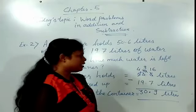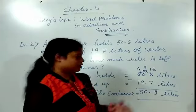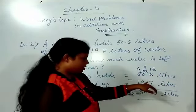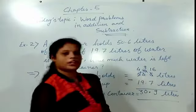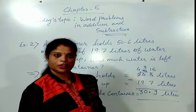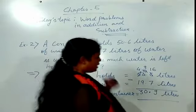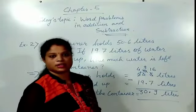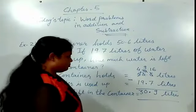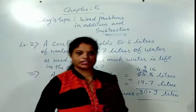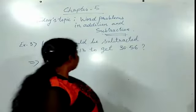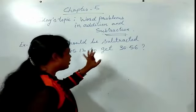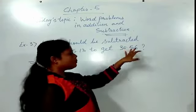So what did we do? We subtracted 19.7 from 50.6. We will see one more example. Children, our third example is: what should be subtracted from 45.13 to get 30.56?